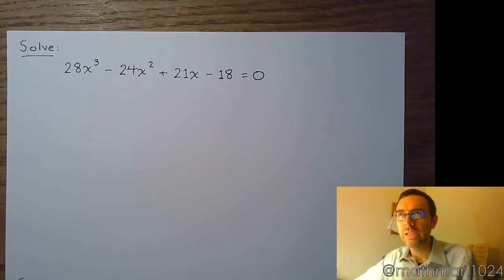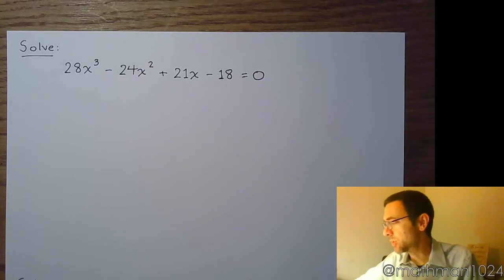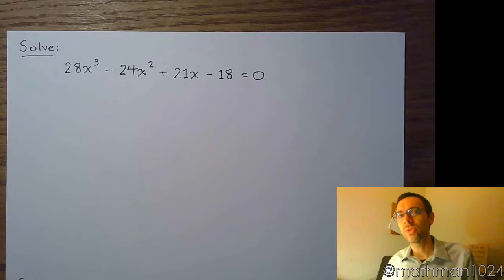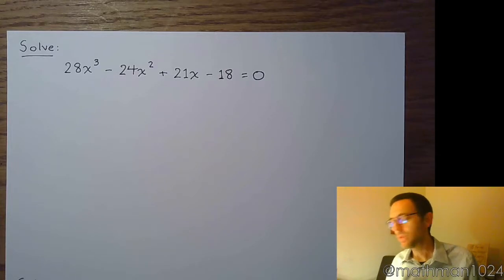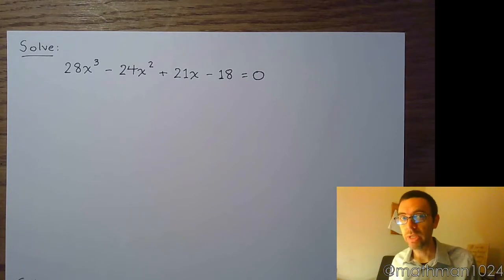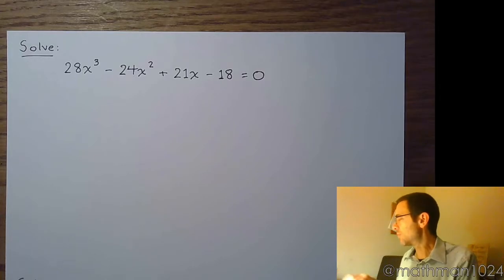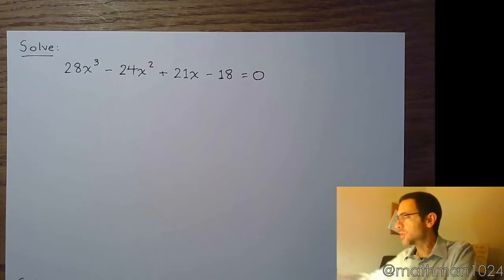In this video, we have some equations to solve, some nice algebraic equations. Starting with this one, we have 28x cubed minus 24x squared plus 21x minus 18 equals zero. This is a polynomial equation — no absolute values, fractions, or radicals. Everything is already on the same side with zero on the other side, so we should think about factoring. With four terms, it makes sense to try factoring by grouping.